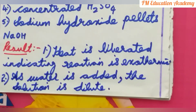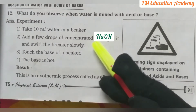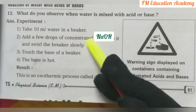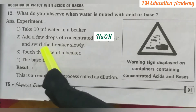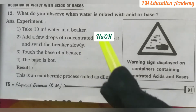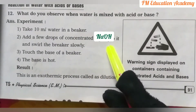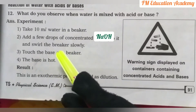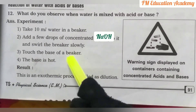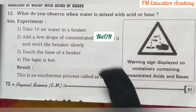Now we will perform the same experiment with sodium hydroxide pellets (NaOH). We take about 10 ml of water in the beaker, add a few drops of concentrated NaOH, and slowly swirl the beaker. After mixing, when we touch the base of the beaker, we observe it has become hot, meaning heat is liberated — which is an exothermic process.